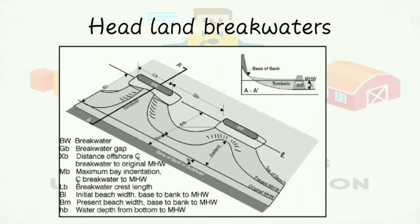The second type is the headland breakwater (HB). A headland breakwater is a series of breakwaters constructed in an attached fashion to the shoreline, angled in the direction of the predominant wave. The shoreline behind the structure evolves into a natural granulate or log-spiral embayment.